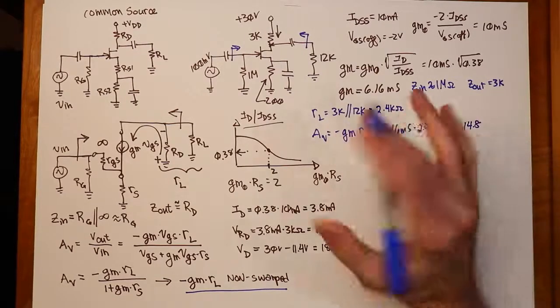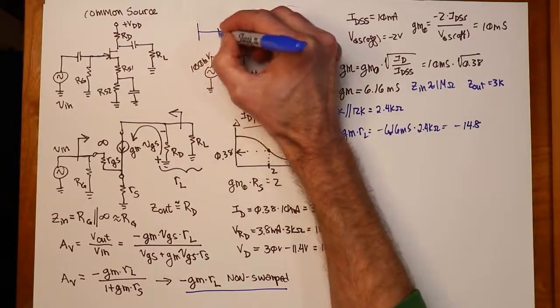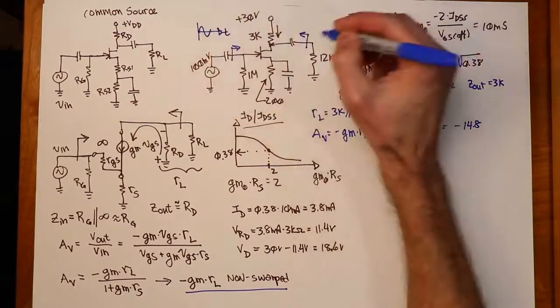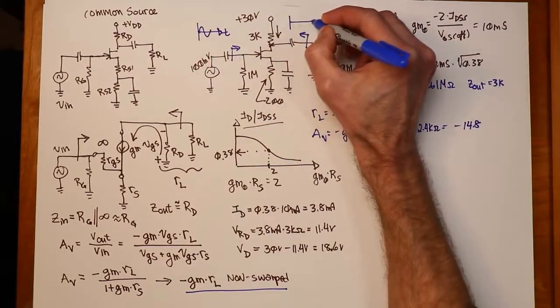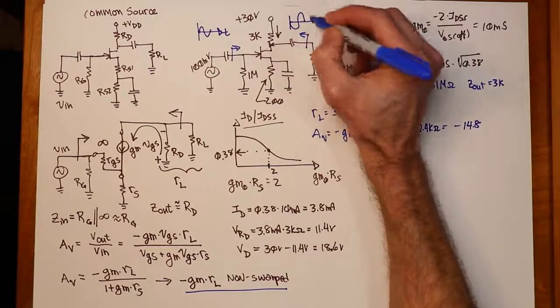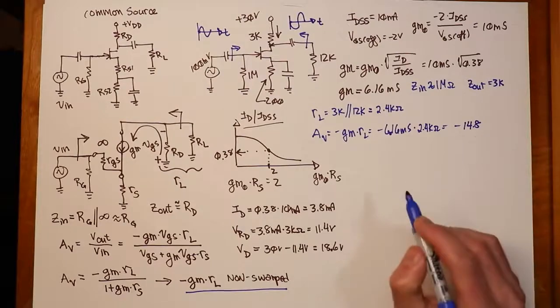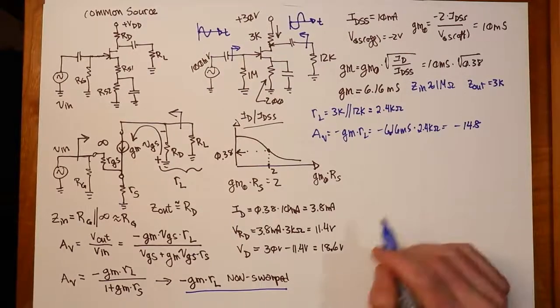So if the input phase, if your VIN looks like this, then your VOUT is just flipped upside down. It's bigger, but it's flipped upside down. 180 degree phase shift. That's all the minus sign tells us, just like in the bipolar case.